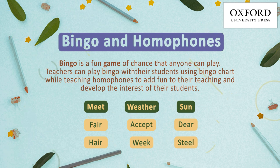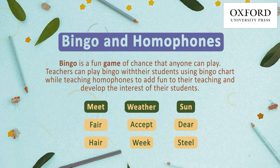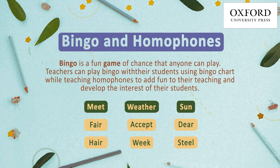The teacher will ask the students to make a bingo chart having 9 cells and randomly select any 9 words from the list of homophones and write them in these cells.